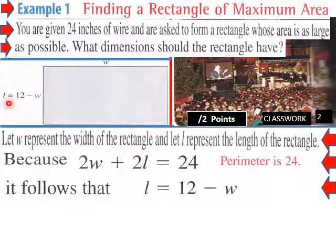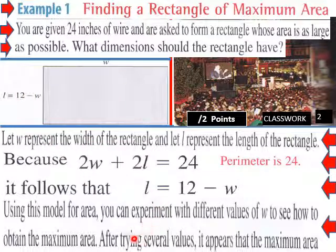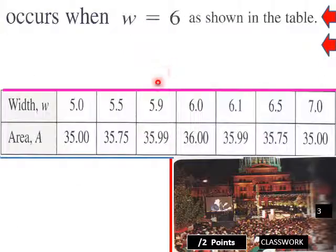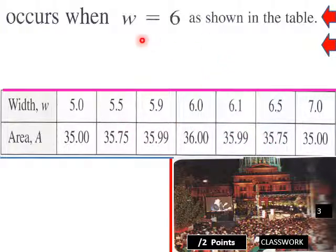Here is a diagram of this situation. Length is expressed in terms of width: you have w, then 12 minus w, so l equals 12 minus w. Using this model for area, you can experiment with different values of w. After trying several values, from the table it appears the maximum area occurs when w equals six, giving an area of 36.